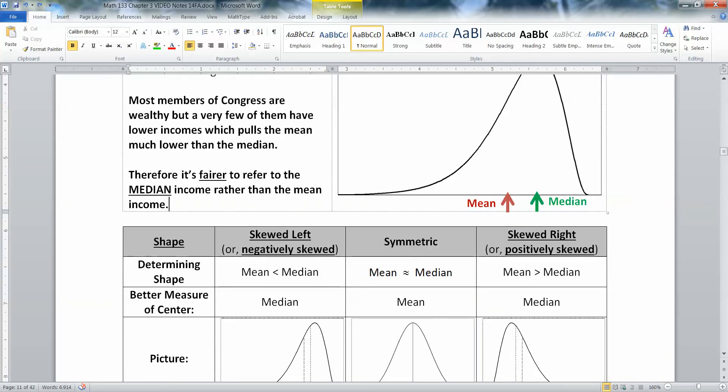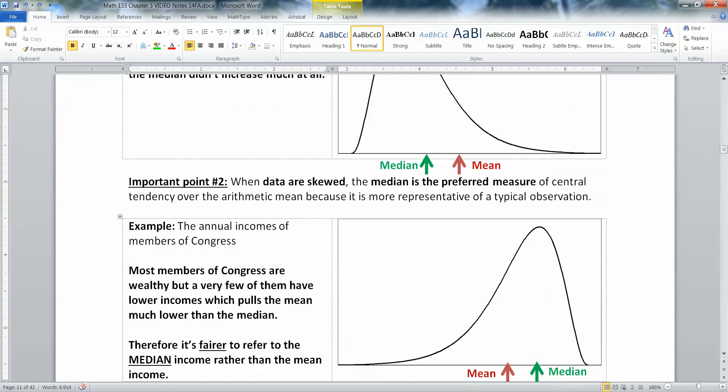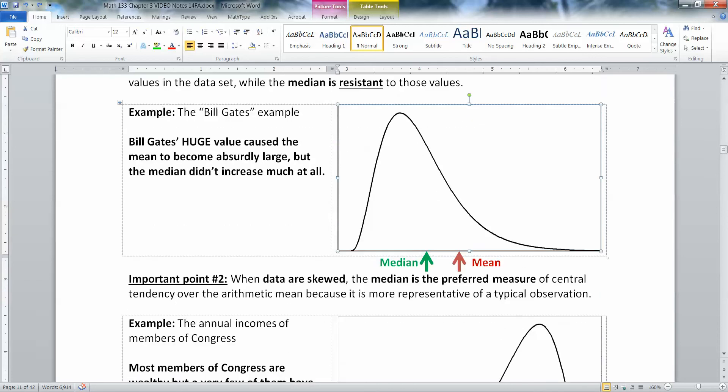And if you ever listen to business reports or watch the Wall Street Journal, et cetera, they'll talk about median income and median housing prices. And this is exactly why, because housing tends to go like this and so does income. They both tend to be very right skewed. Most people have houses in a certain range and a few people have mansions. So it's not fair to talk about a mean housing price. It's fair to talk about a median housing price, similarly with income.